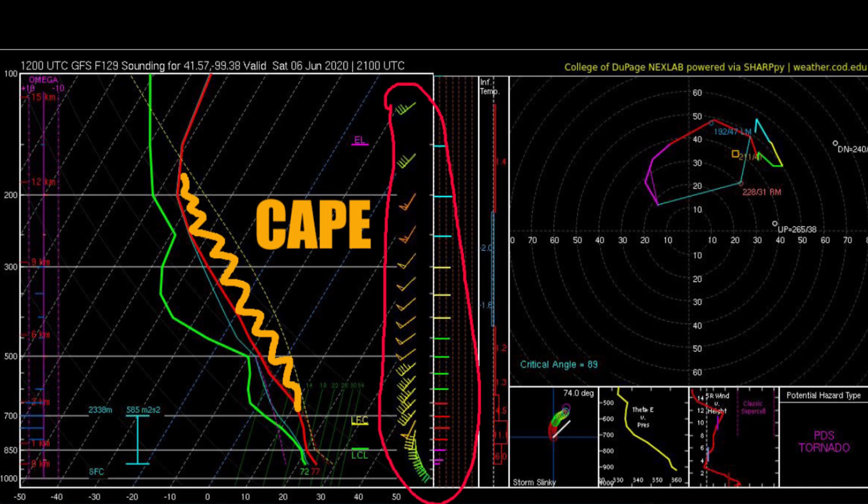The second important ingredient for supercells is something called wind shear. It is essentially the change in direction and speed between winds at different altitudes. The greater the difference in speed and direction between altitudes, the greater the shear. The wind shear causes an updraft rising through it to rotate, typically in a counterclockwise direction in the northern hemisphere. If this rotating updraft is persistent, we call it a mesocyclone.